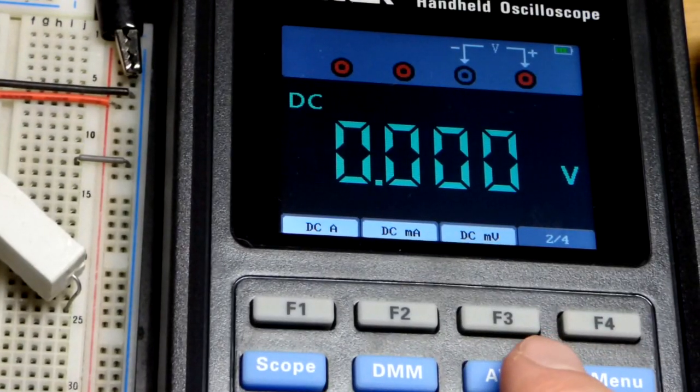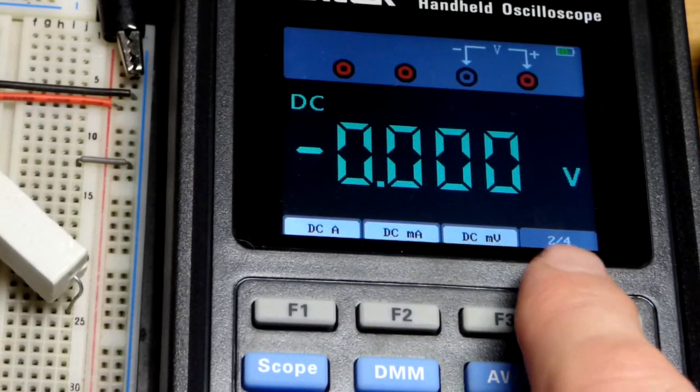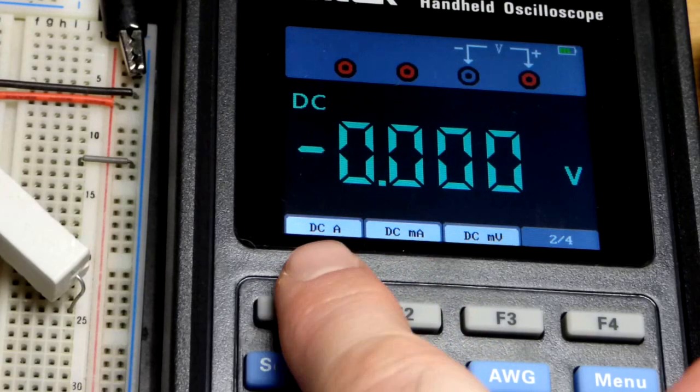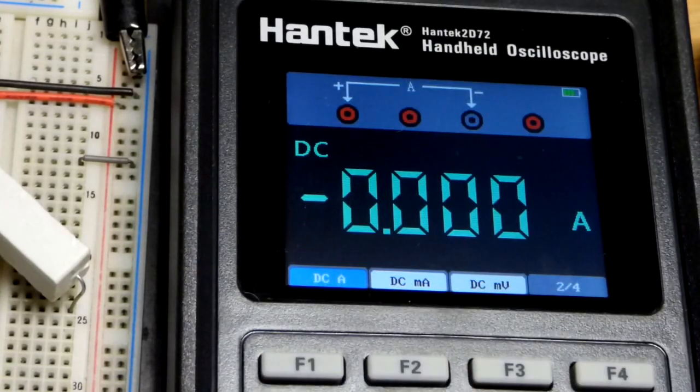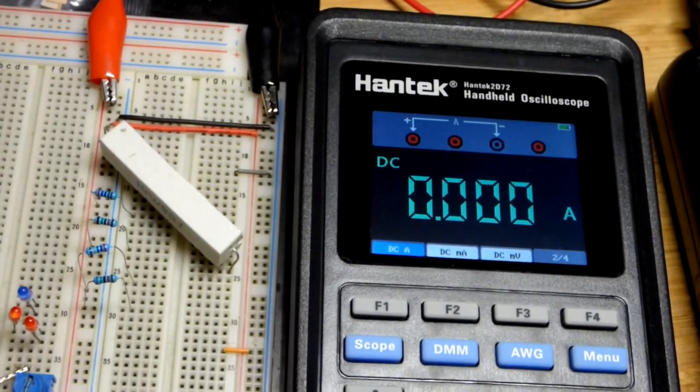We're going to hit, we already hit the DMM and then we went to the next menu options. And so there's DC milliamps and DC amps. DCA right there. And now we can measure the resistor.